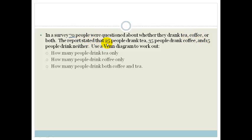The report stated that 25 people drank tea, 35 people drank coffee and 15 people drank neither. Now it says use a Venn Diagram to work out what we have.